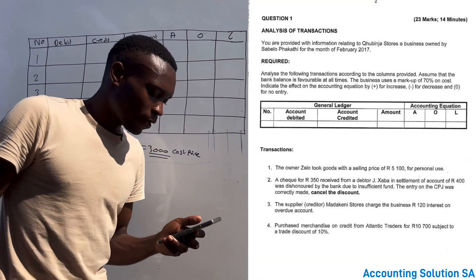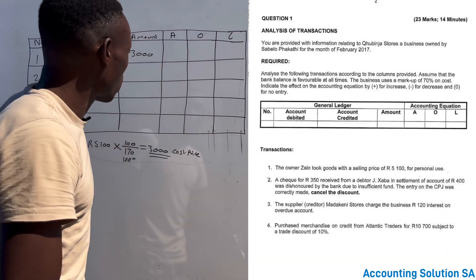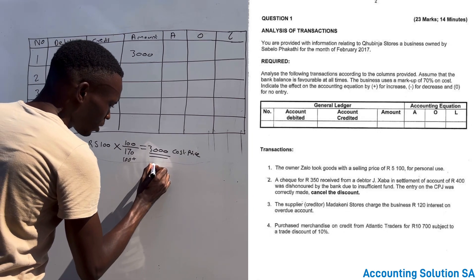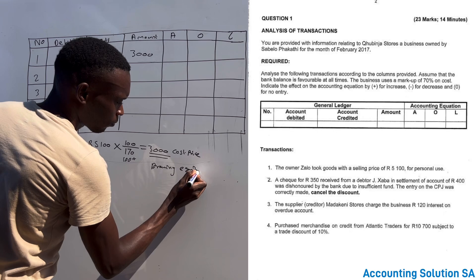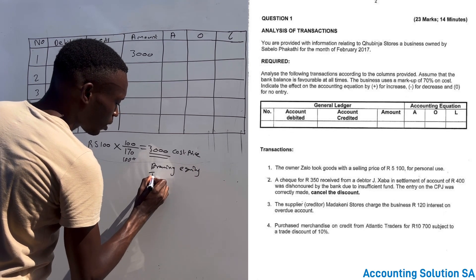Now what I want to debit, what I want to credit. We have drawings and trading stock. Drawings is equity and this trading stock is an asset.